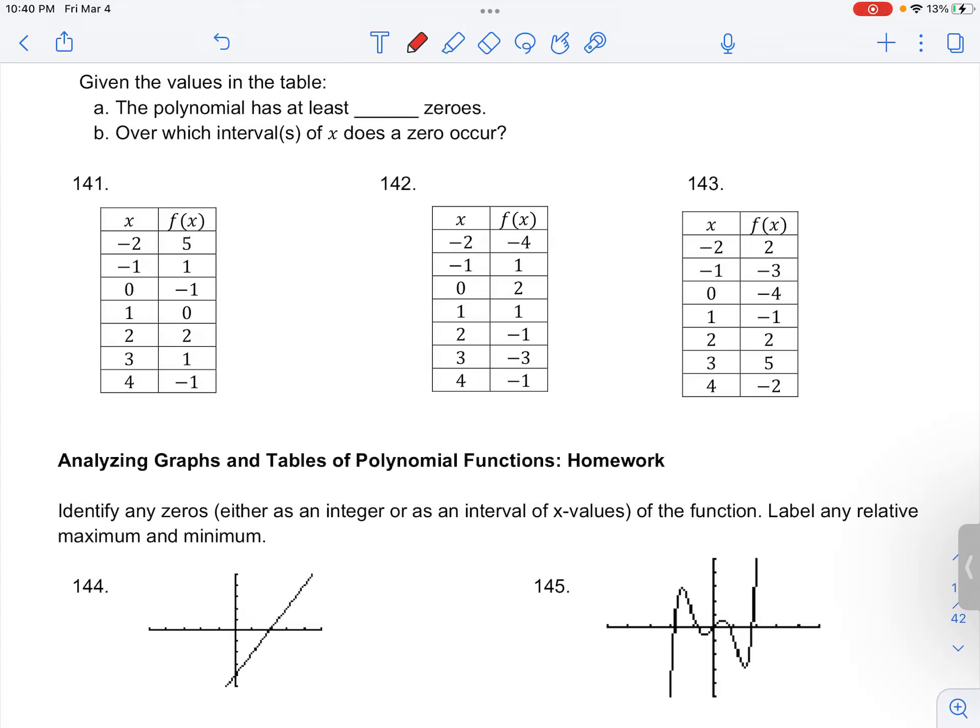Number 143 in your classroom for polynomial functions asks you how many zeros does the function at least have and on which intervals they occur.